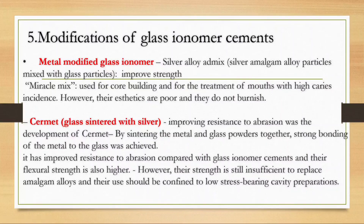Cermet is glass sintered with silver, improving resistance to abrasion. It was developed by sintering metal and glass powders together, which gives strong bonding of metal to glass and improved resistance to abrasion compared to GIC. Flexural strength is also higher, but strength is still insufficient to replace amalgam alloys; use should be confined to low stress-bearing area cavity preparations.